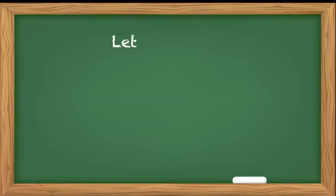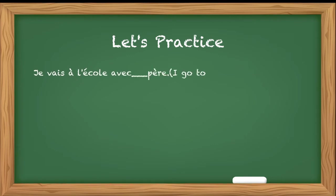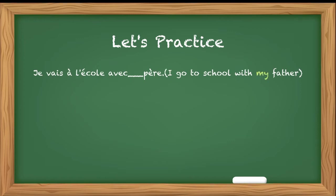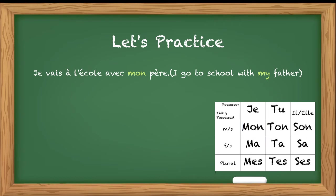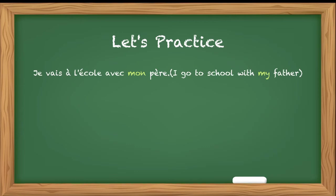Let's try and make a few sentences and see how to use these possessive adjectives. 'Je vais à l'école avec ___ père.' I go to school with ___ father. So obviously I will go to school with my father, and father is masculine singular. Looking at the table below je, we have three options: mon, ma, mes. But mon will be used with masculine singular. So here we are going to use mon père — Je vais à l'école avec mon père.